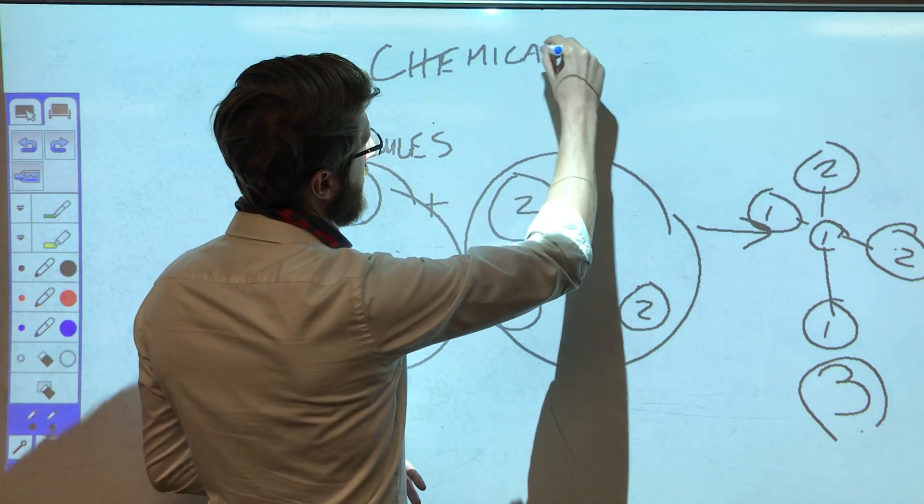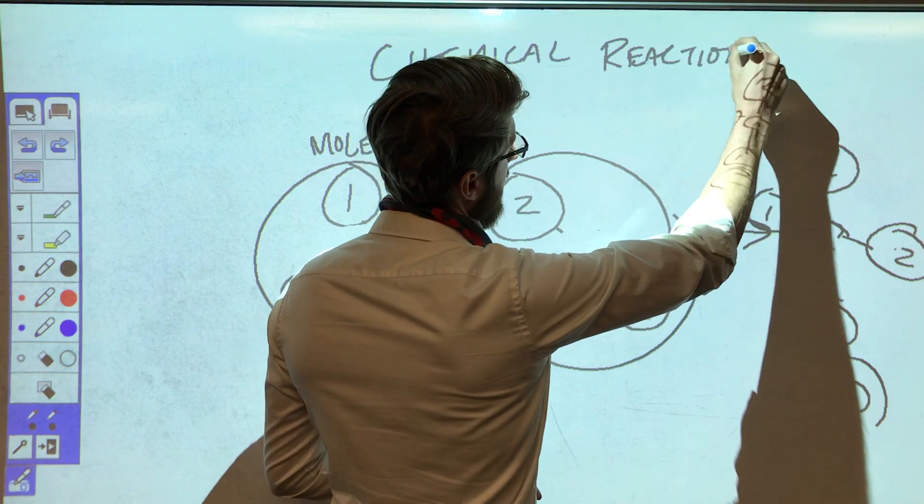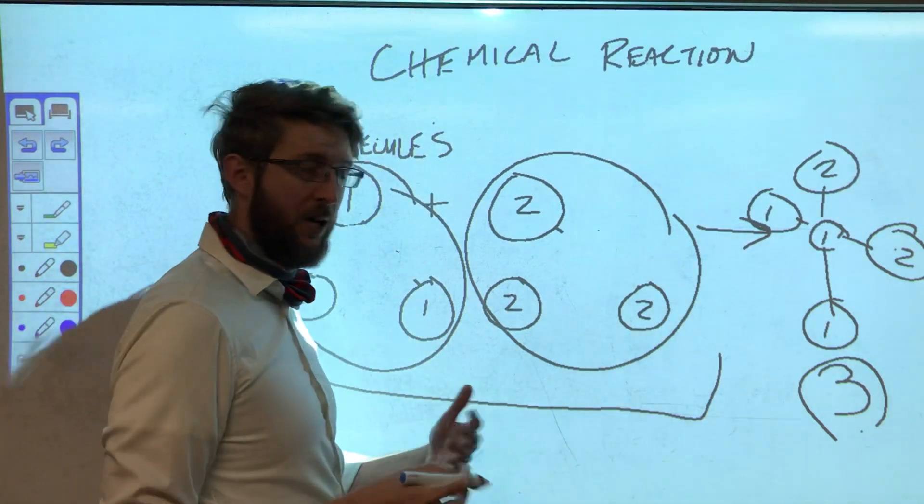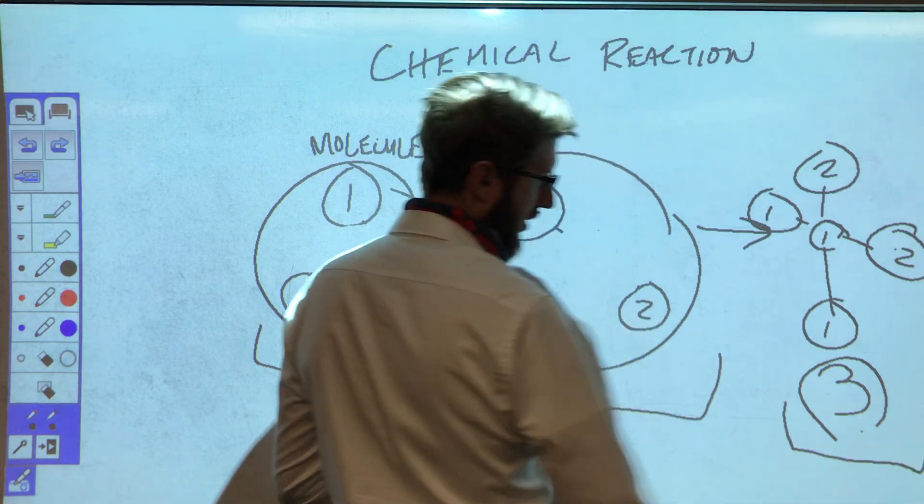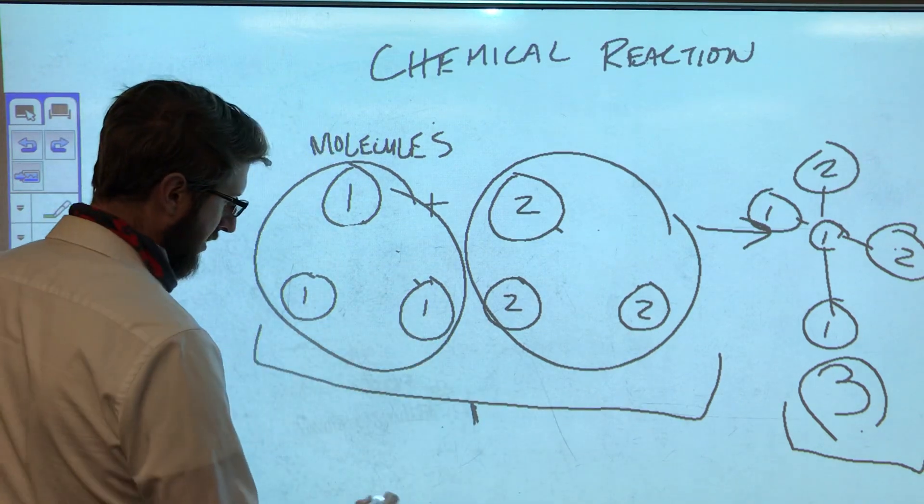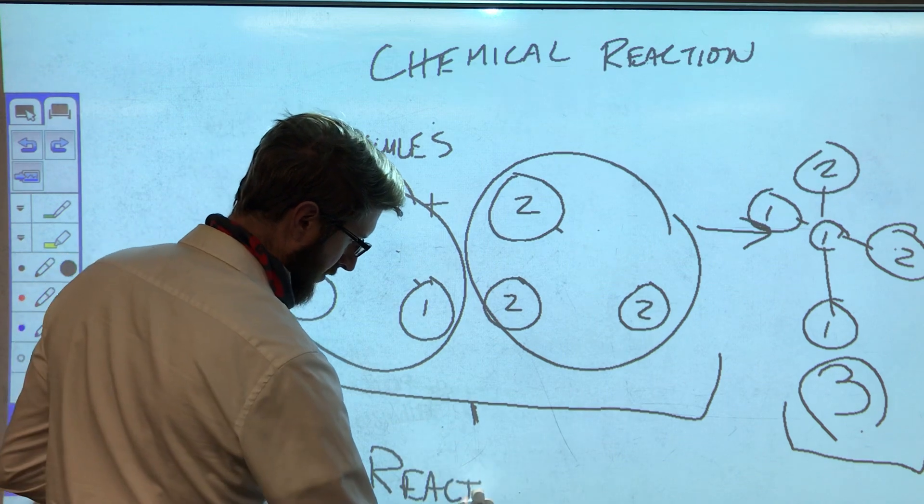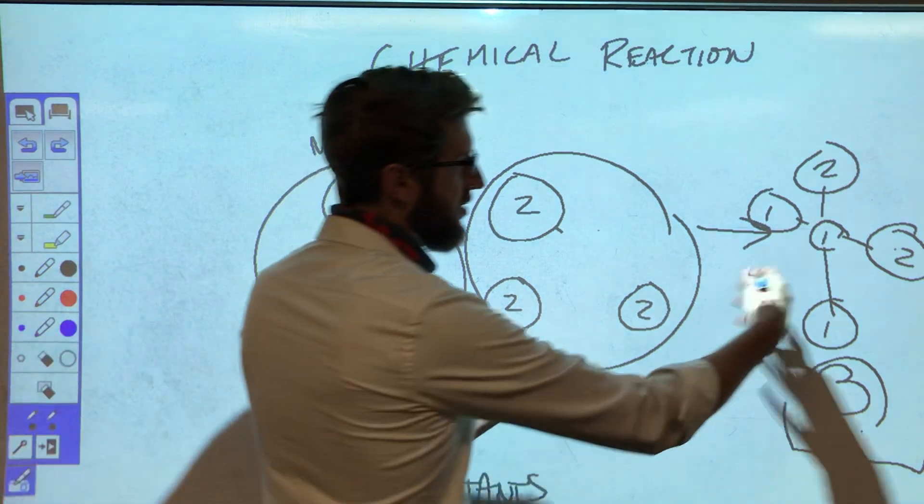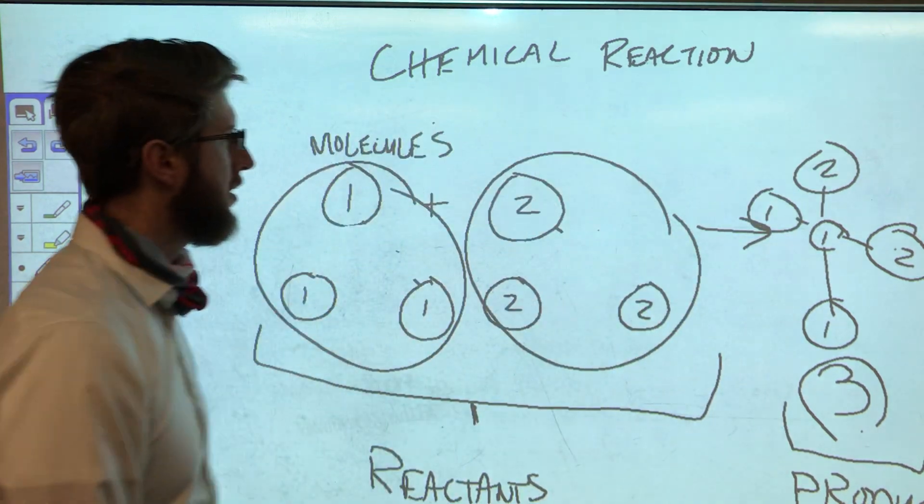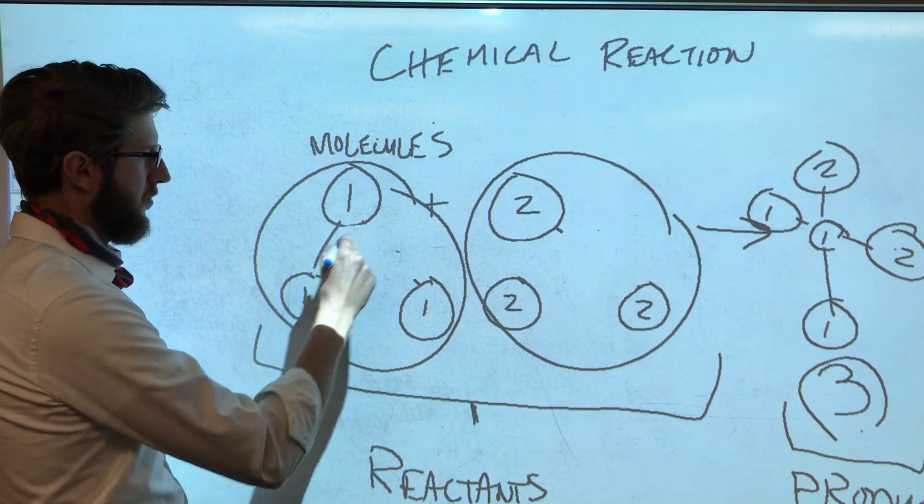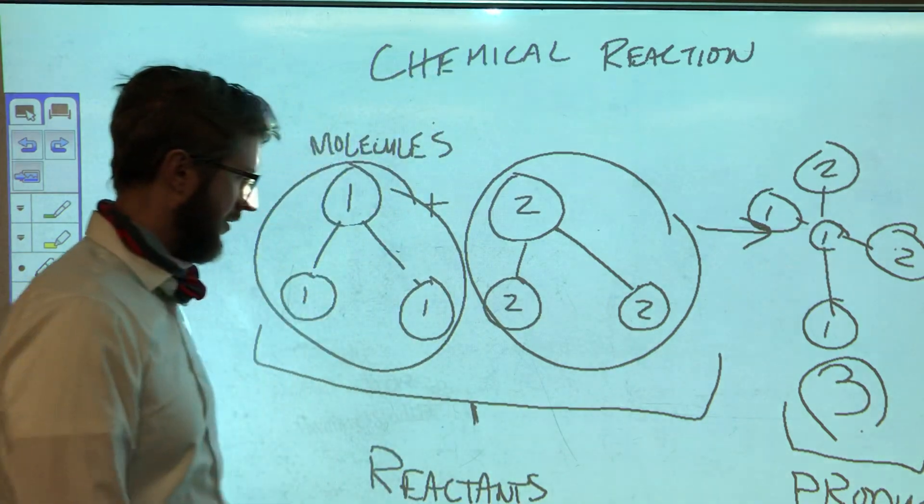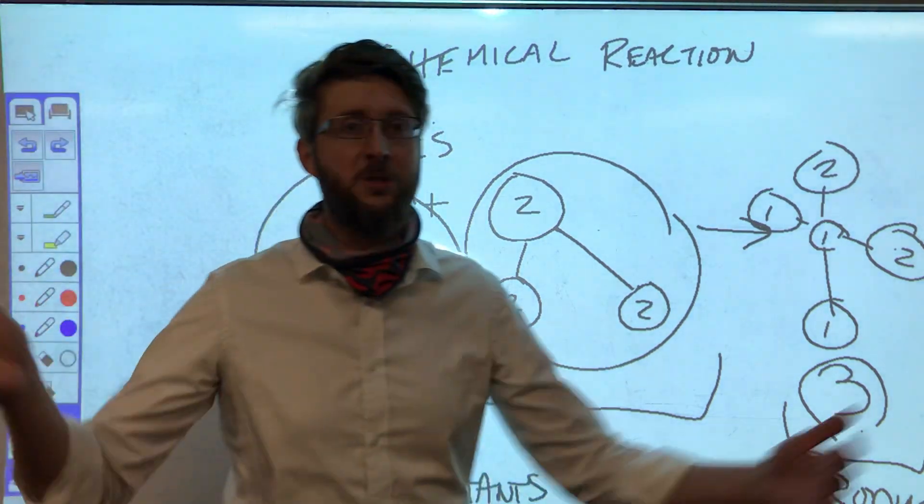Now a chemical reaction has things that you're mixing or putting together and things that you end up with. The things that you're going to combine or put together into a space are what we call your reactants, and the things that you end up with are called your products. So molecules one and two, these are your reactants, and molecule three is the product. And that is chemistry in a nutshell.